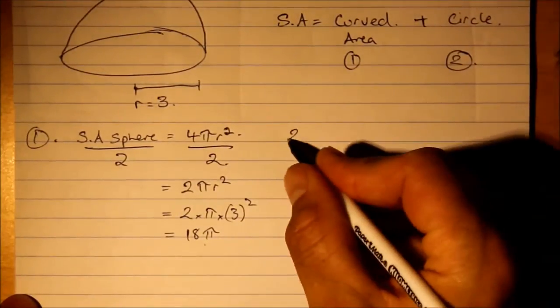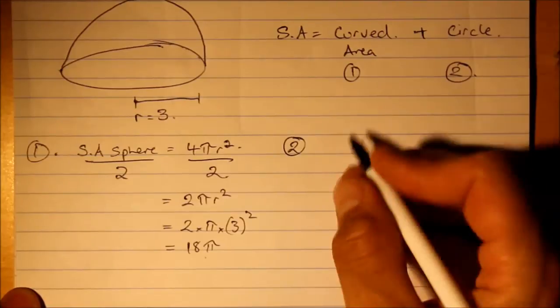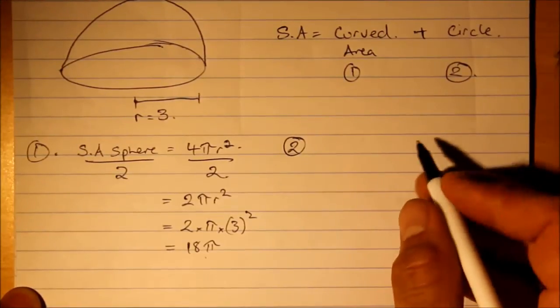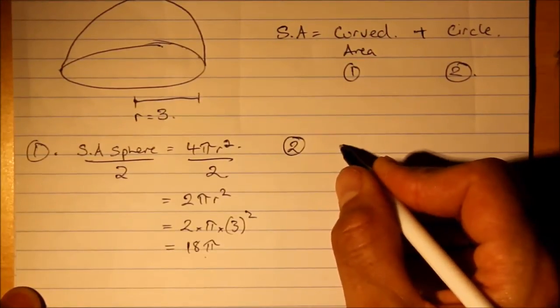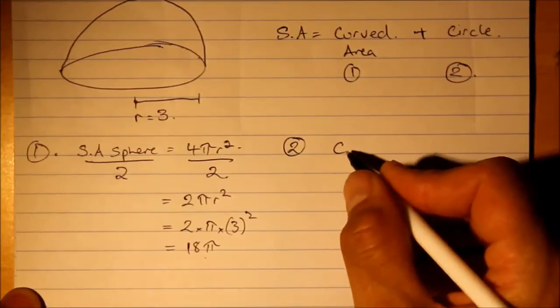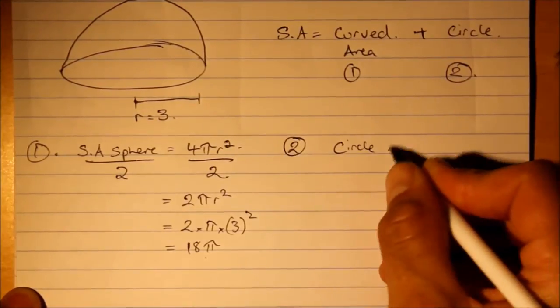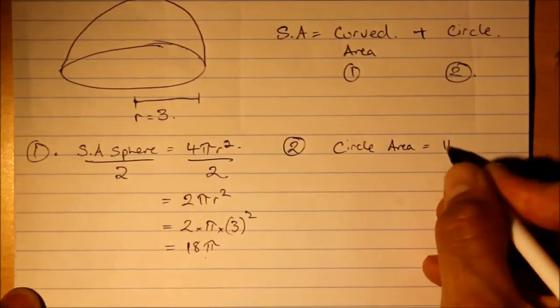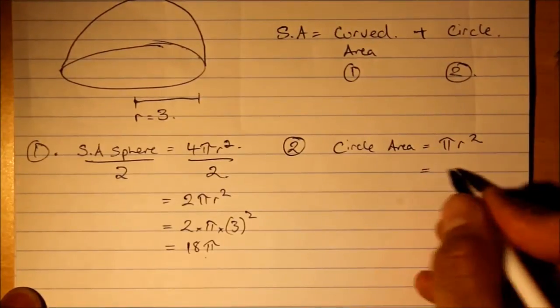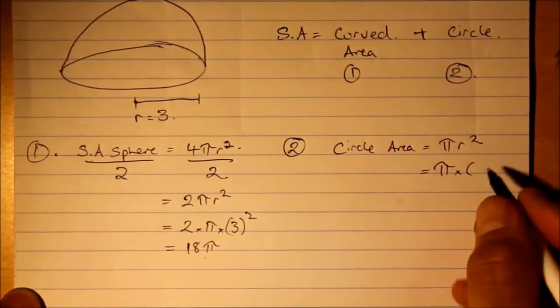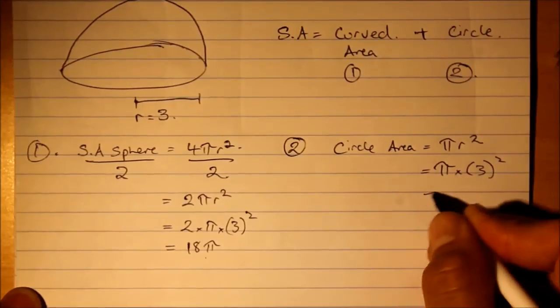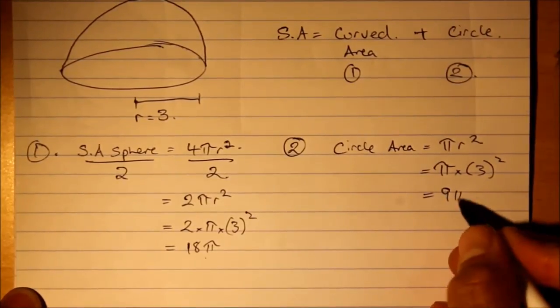So let's work on 2 now, which is just the circle. Radius is still 3, so area of the circle is pi r squared, pi times 3 squared, which is 9 pi.